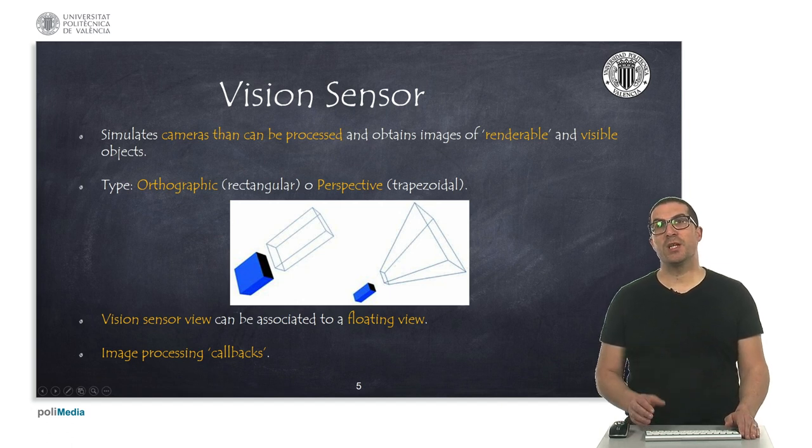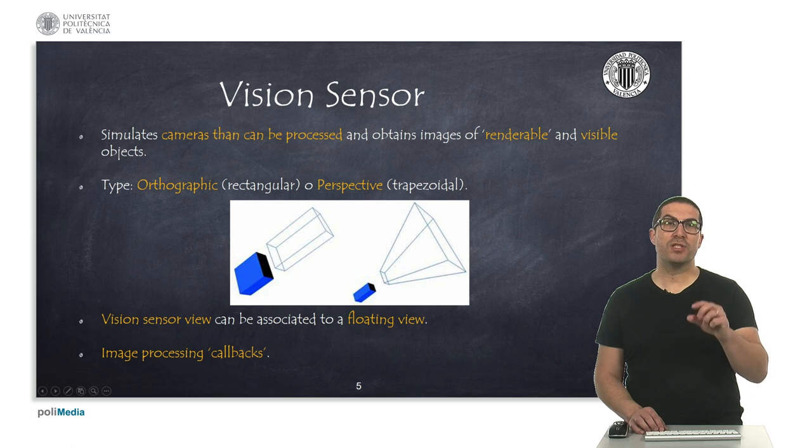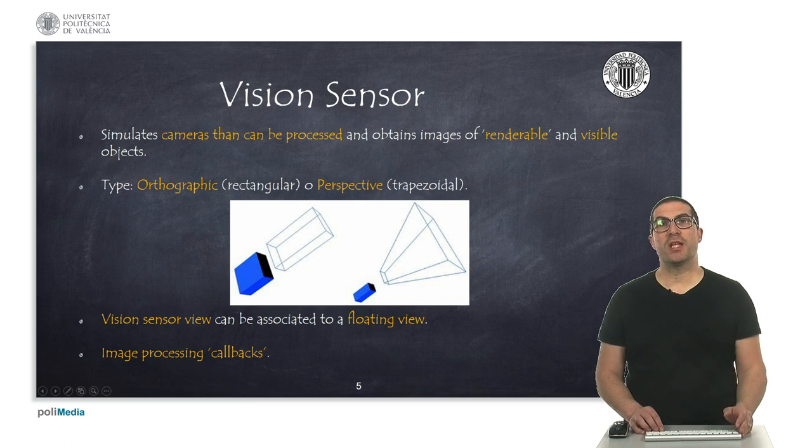Vision camera processing can be implemented using function callbacks. These are special types of functions that will be called whenever we get a new image using this sensor, but this is something we will see in a different video.